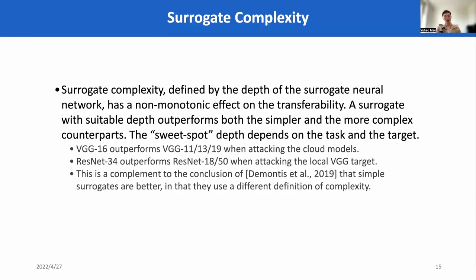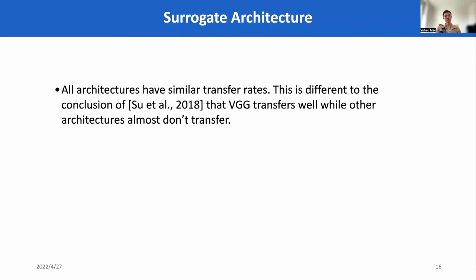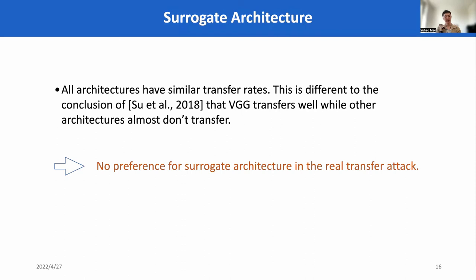We also consider the surrogate complexity. As we are in the context of neural networks, we define the surrogate complexity by the depth of neural networks. We found that this complexity has a non-monotonic effect on transferability. A surrogate with a suitable depth outperforms both simpler and more complex counterparts. This suggests that there are probably optimal complexities for surrogates, which should depend on the task and the target. We also discussed the architecture and found that all surrogate architectures have similar transfer rates. This is different from lab conclusions that VGG transfers well while other architectures almost don't transfer, suggesting that in a real transfer attack, no preference for surrogate architecture exists.